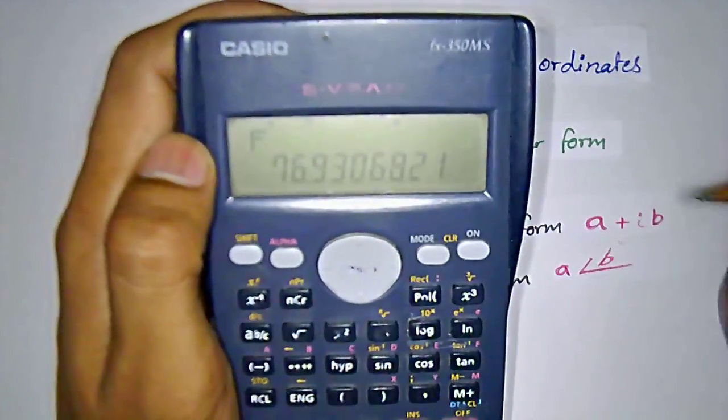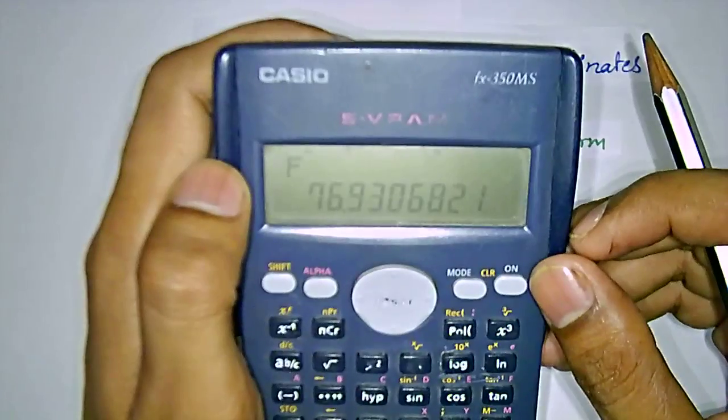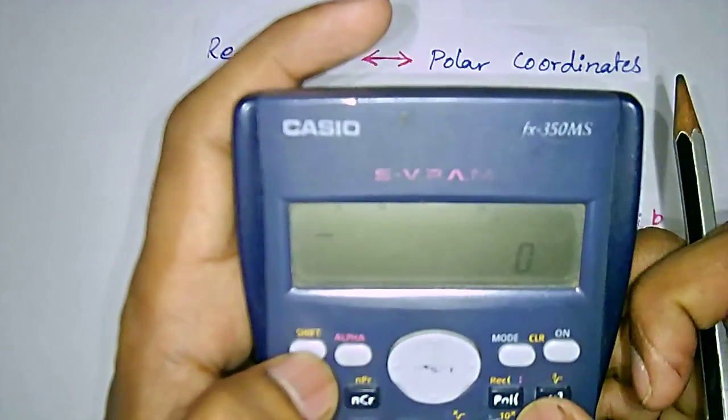Same will happen when we are changing polar to rectangular form. Let's see here, we want to change to rectangular form.